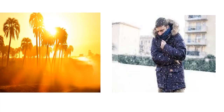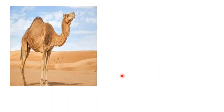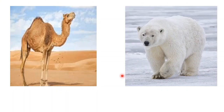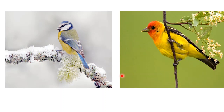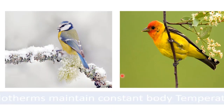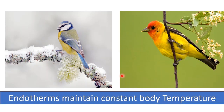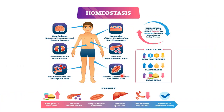Whether you live in a hot or cold environment — mammals like camels living in the desert, or polar bears in the arctic, or birds in winter or summer — they all share one common feature: they control their body temperature. They can generate heat, which makes them endotherms, and endotherms maintain a constant body temperature. Maintaining constant body temperature is part of a mechanism called homeostasis.